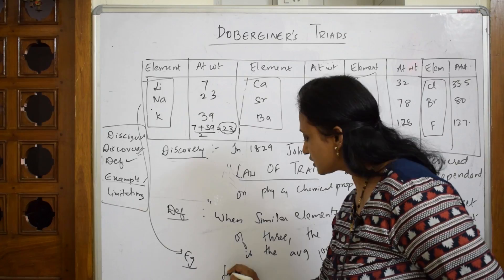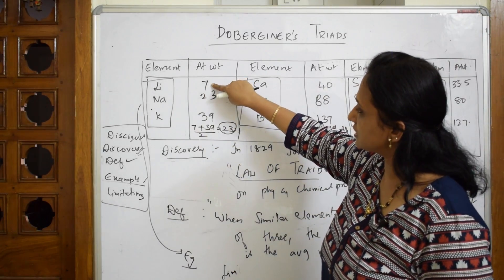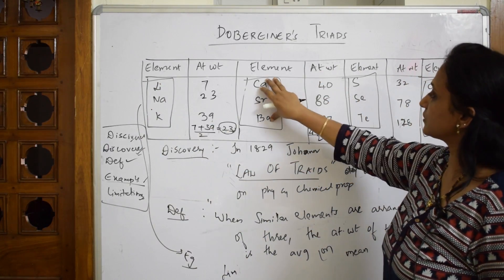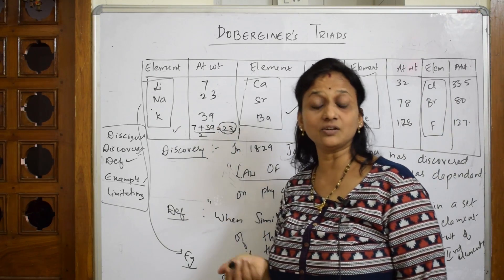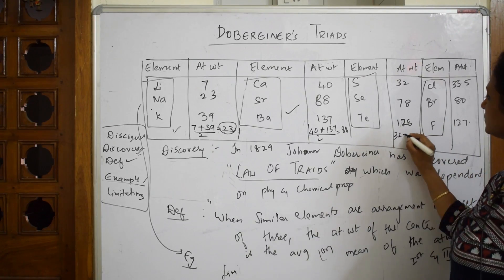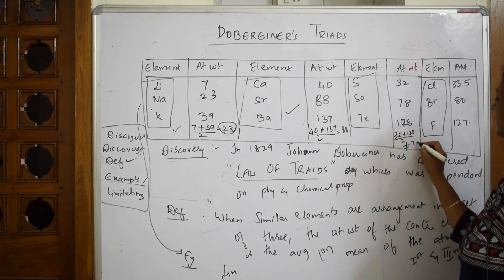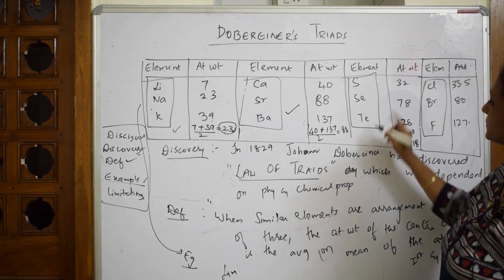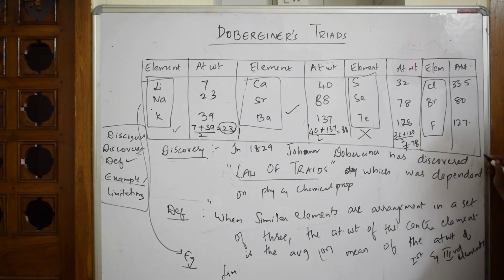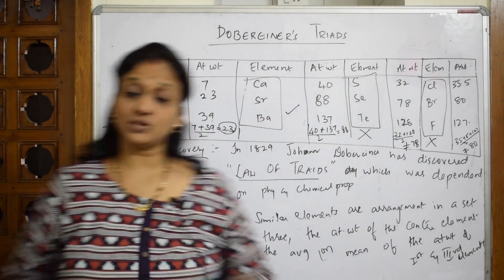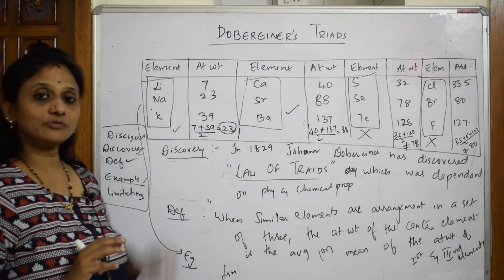Now the limitations. The law was valid for the first two sets but when he tried applying it to sulfur, selenium, and tellurium — 32 plus 128 divided by 2 gives 80, but the actual atomic weight of selenium is about 78 — not equal. Similarly for chlorine, bromine, and fluorine — 35.5 plus 127 divided by 2 gives about 81.25, not equal to 80. So this concept was not valid for these sets.